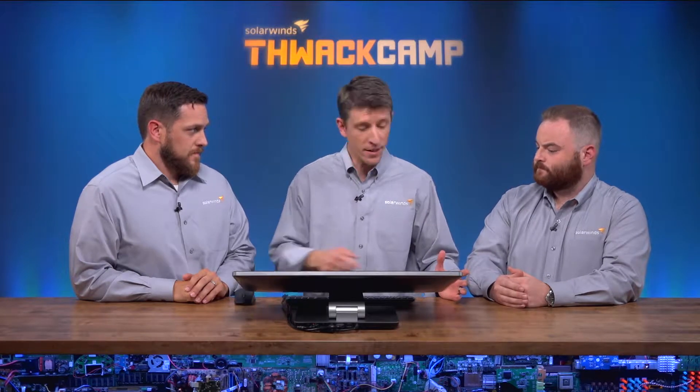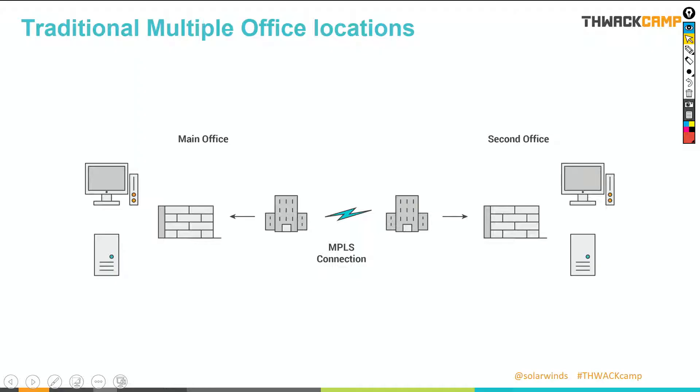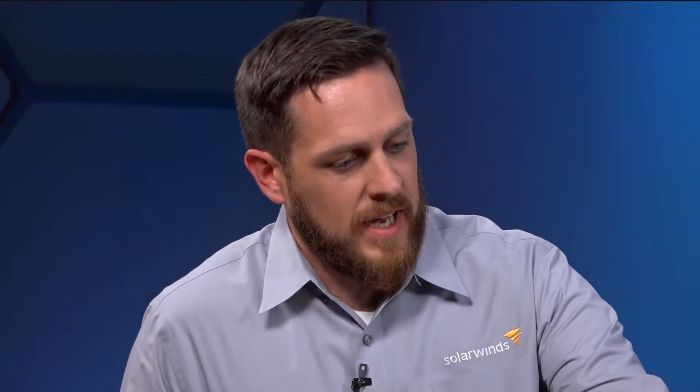Alright guys, let's start with the first scenario. Let's assume you've got two large offices that are connected via a fast MPLS connection. How would you go about monitoring it? So there are a lot of different architectures that could come into play, but let's talk about a fairly common one. If we're trying to gather information from both the main office and the second office, typically what we would do is have a server collecting information over in the main office.